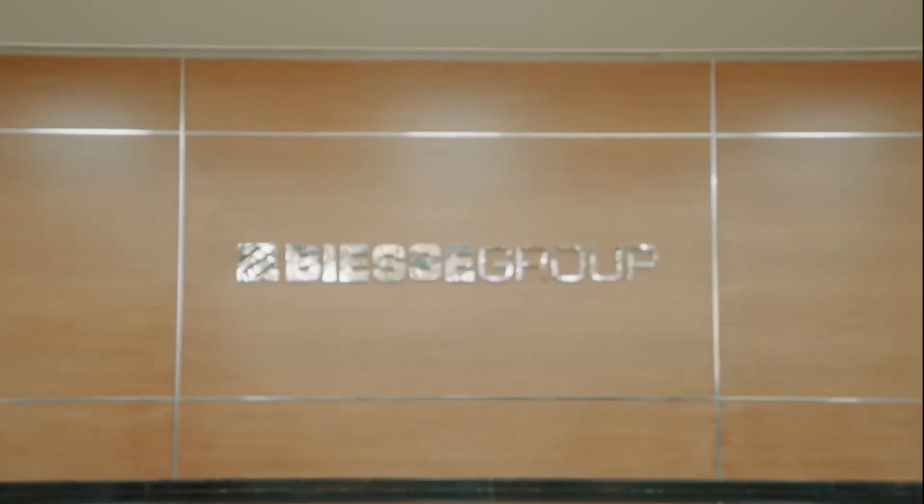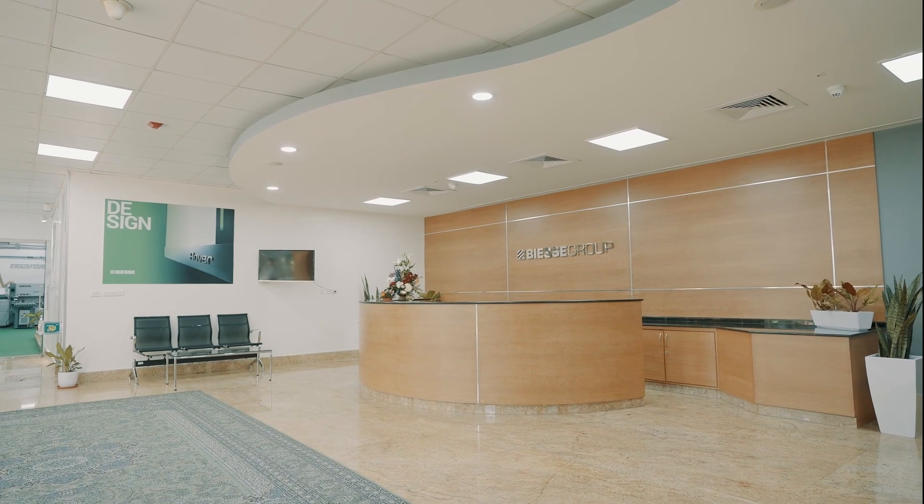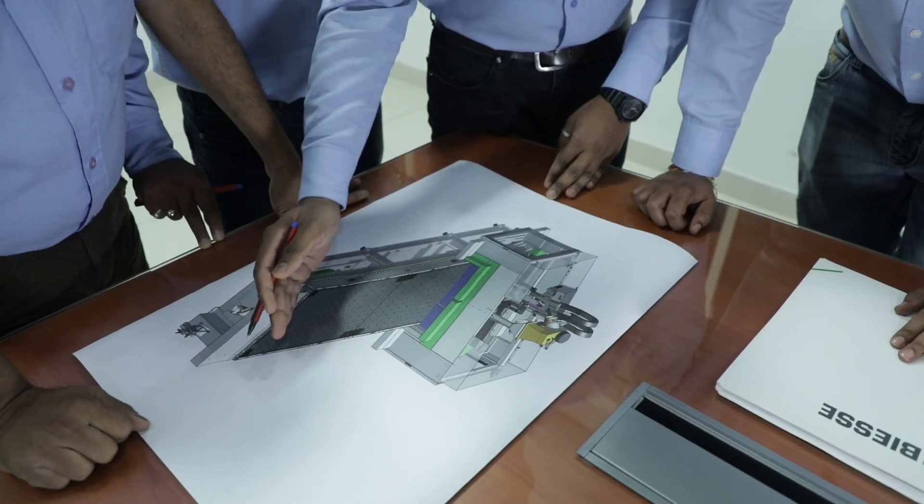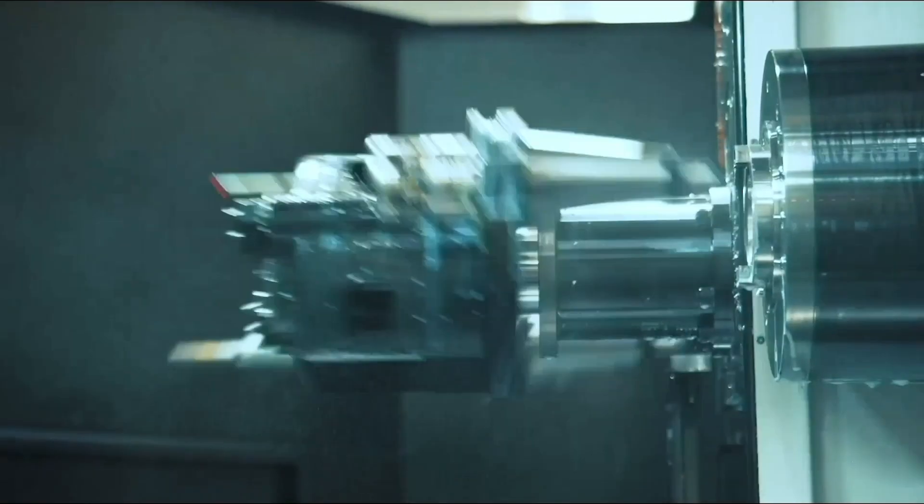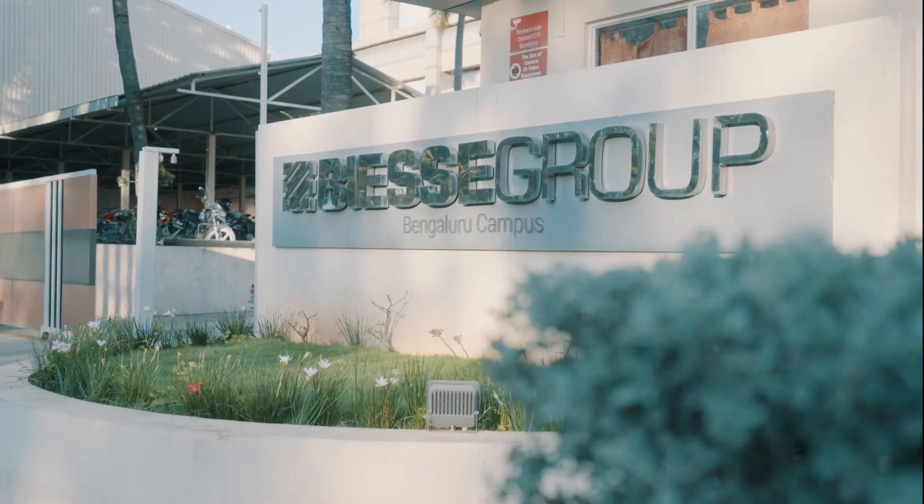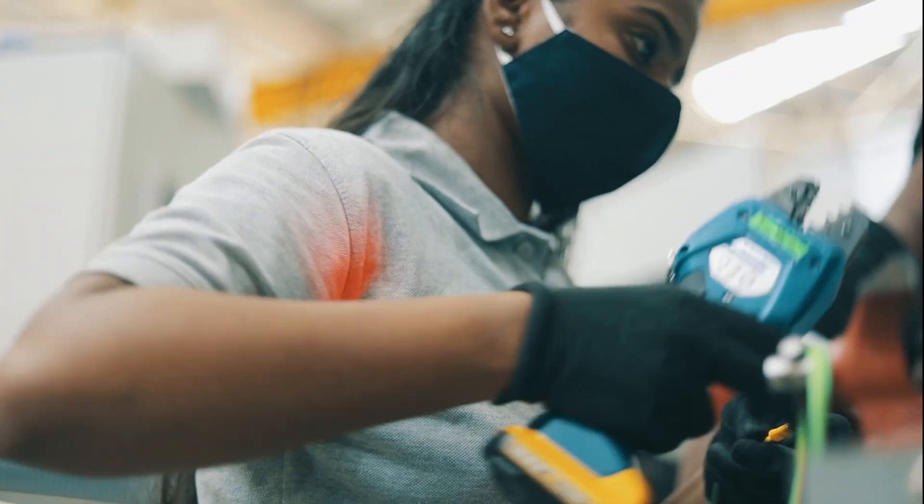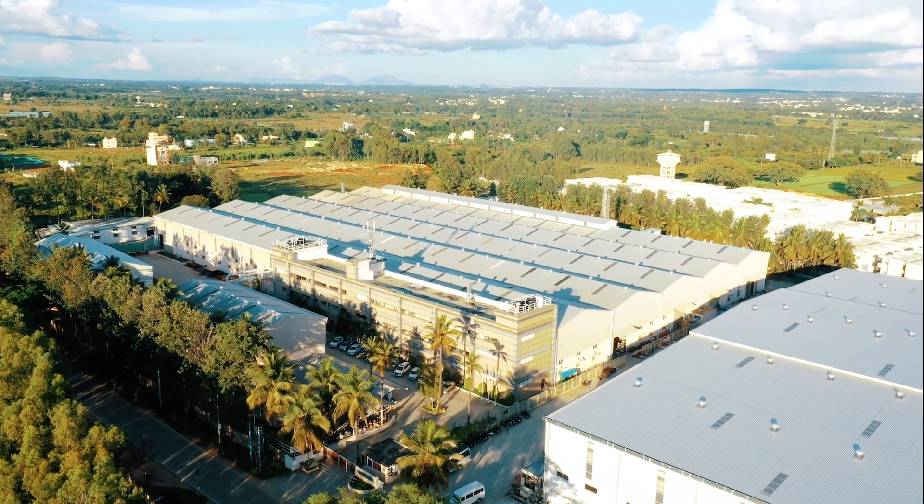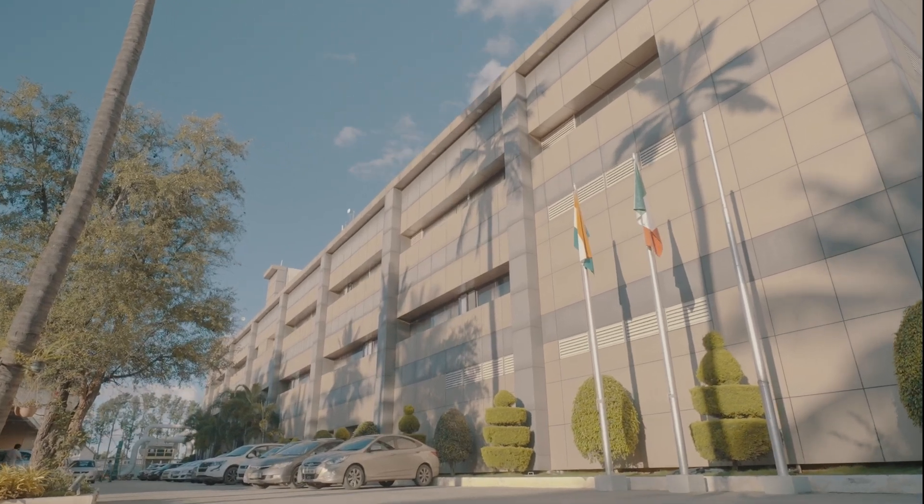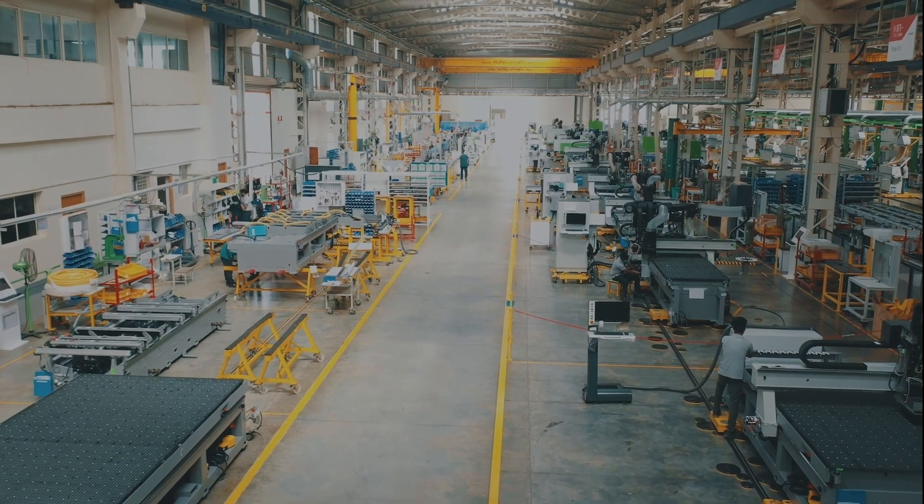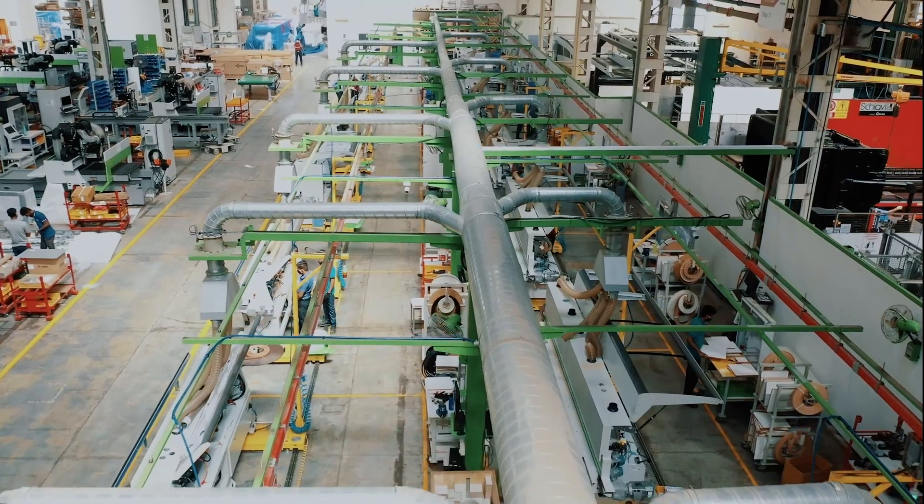BSA India was established in 2006 with a team of 10 members to provide a comprehensive range of technologies and solutions in the woodworking industry. Its world-class manufacturing facilities in Bengaluru spread over 30,000 square meters with annual capacity to manufacture over 2,000 machines that are available in 100-plus different configurations.